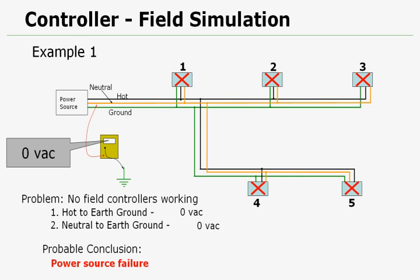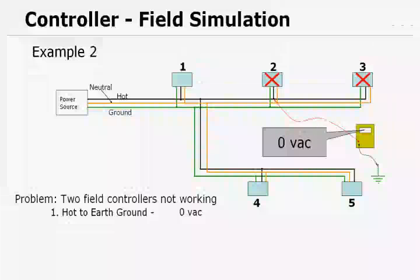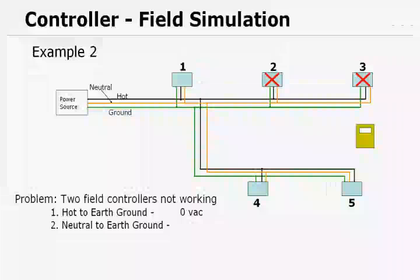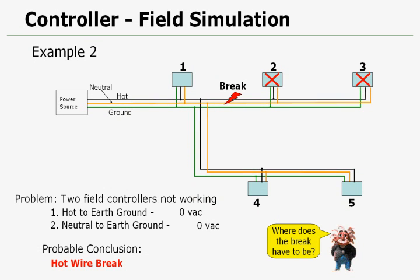Here's example two. Out of the five controllers, two are not working. So first let's take our readings hot to earth ground. We're going to do this at the first controller that's not working from our power source. Here we have 0 volts. Let's take a second reading, neutral to earth ground. And here we have 0 volts. Well from what we've learned so far, there's got to be a break. Where does the break have to be? We can deduce that it's a hot wire break. And it has to be right before or between the first controller that's not working and the last controller that is working.